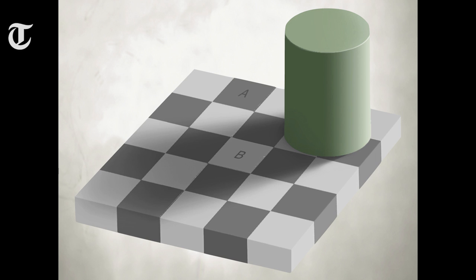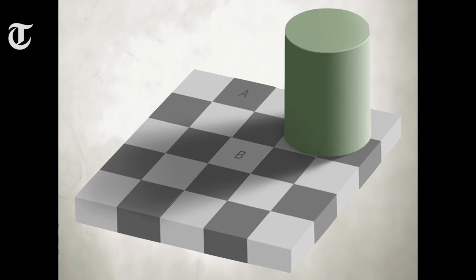Now what's going on here? What's happening is the brain knows what happens when shadows pass over things. So the brain knows that for something to look a bit darker in shade, probably it's actually a little bit lighter. So that's why you see the bottom square as lighter, because the brain unconsciously controls for the effects of shadow. That's why you see it as lighter than the other square.